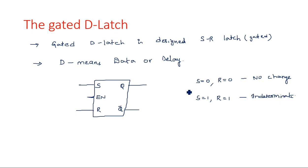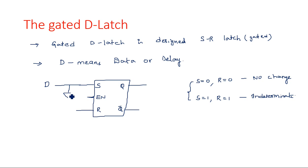To eliminate the problematic cases — S=0,R=0 (no change) and S=1,R=1 (indeterminate) — the D Latch came into existence. In the D Latch these two cases are eliminated by taking a single input D, with the other input driven through a NOT gate, connecting S and R with a common input D.